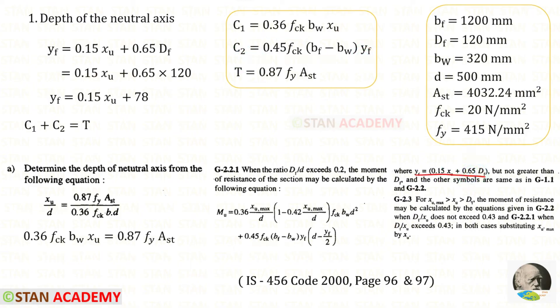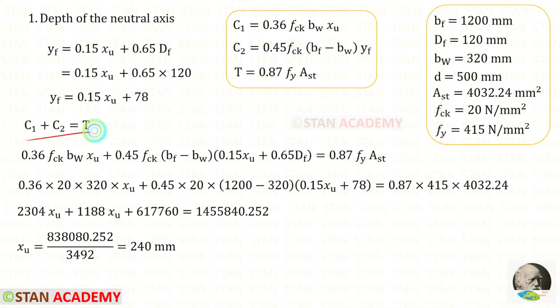Using this formula we can find YF. DF is 120. We can apply that so that we will get this. In this we can apply C1, C2 and T and then we can apply all of the values. In this way for XU we will get 214 mm. For DF upon XU we will get 0.5. So DF upon XU is greater than 0.43.